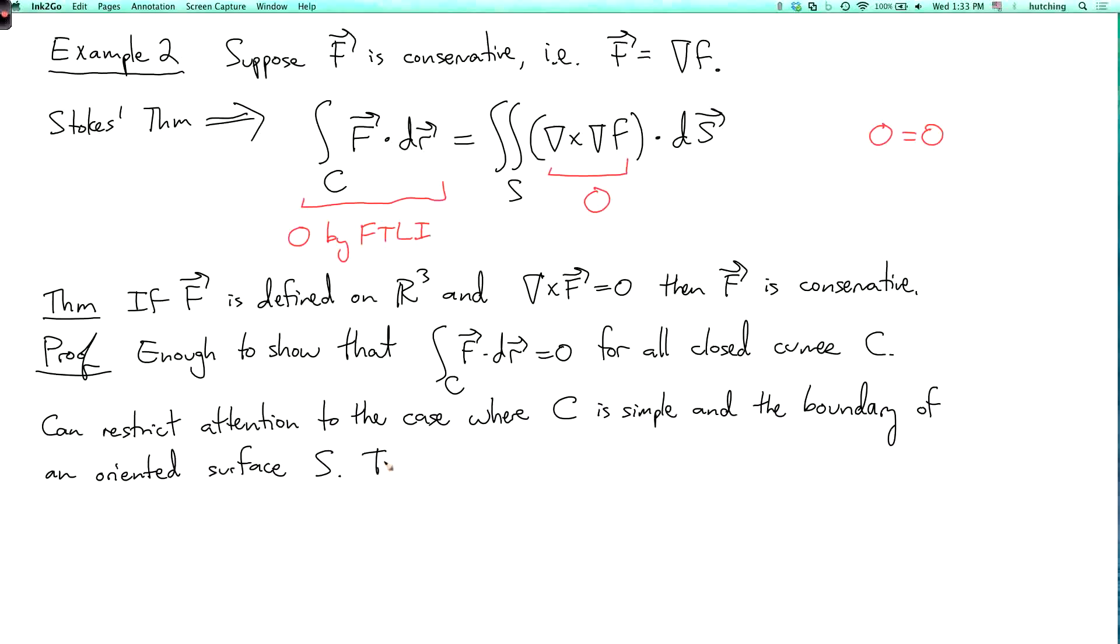to the case where c is simple and the boundary of an oriented surface s. So then, if you use the positive orientation, I mean, we're trying to prove that this integral is zero, so it doesn't matter which orientation you use, you should get zero either way. So then, with the positive orientation, if we give c the positive orientation, then Stokes' theorem tells us that the integral over c of f dot dr is the double integral over s of the curl of f dot ds.